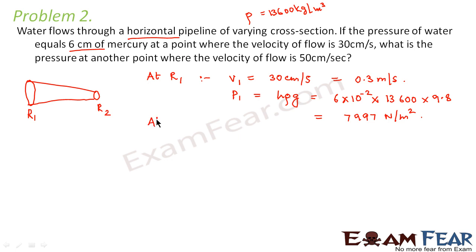Now let us look at the second point at point R2. At R2, the velocity V2 is given as 50 cm per second which we can write as 0.5 meter per second. So the question asks us to calculate the value of pressure at R2.